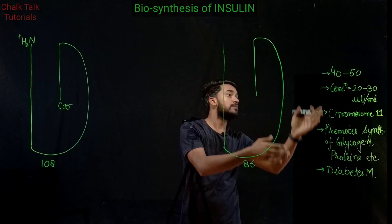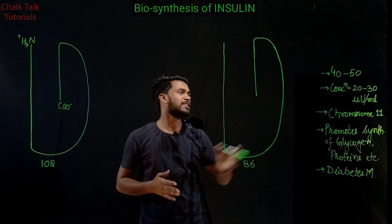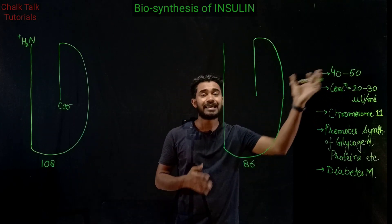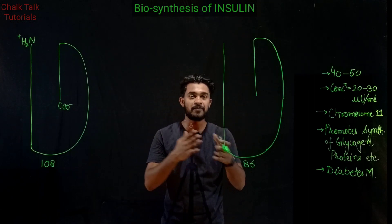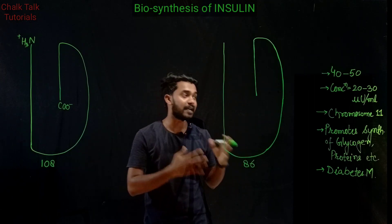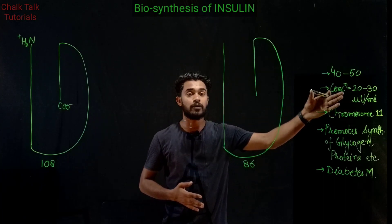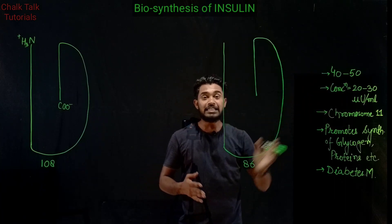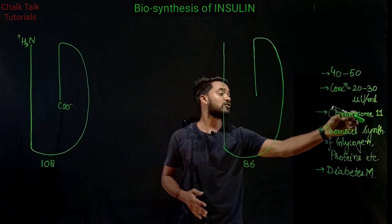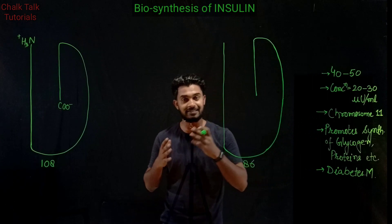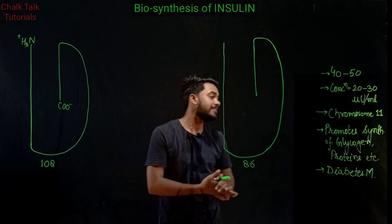The normal production of insulin in the human body is about 40 to 50 units per day, produced by the islets of Langerhans in the pancreas. The normal concentration of insulin is also present in human body plasma. The gene responsible for the production of insulin is located on chromosome number 11, in the pancreatic cells known as the islets of Langerhans.